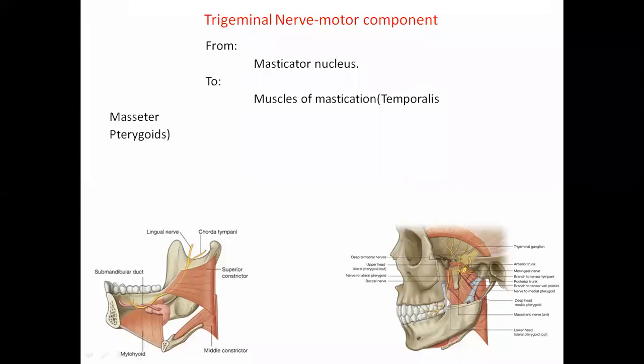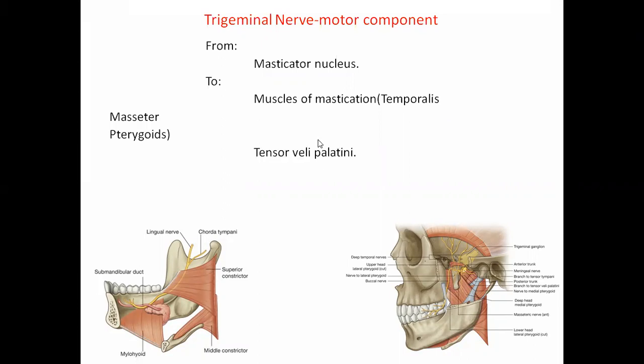You can imagine the trigeminal nerve like a pipe in which flow is possible in both directions: the motor component flows away from the brain toward the periphery, while the sensory component flows toward the brain, carrying sensations from the face region to the brain.